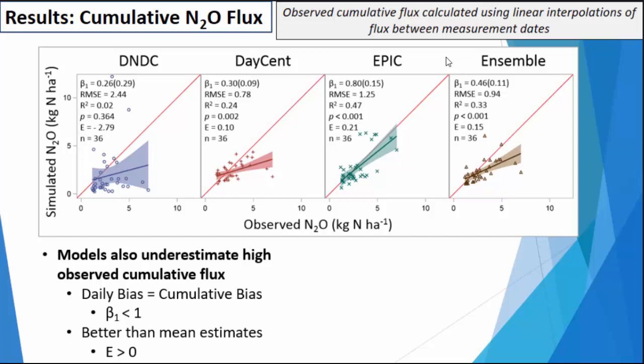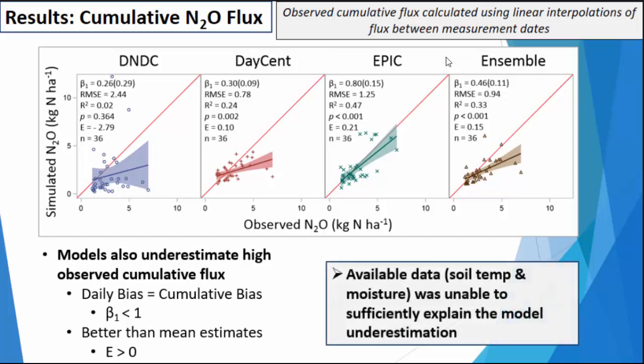Other than identifying this bias, we also want to try and explain it. One way is to look at other data collected at the same time as the N2O. We know that high soil temperature and soil moisture are associated with conditions for peak N2O flux, and they're typically collected alongside N2O measurements. However, we weren't able to use that data to sufficiently explain why the models were underestimating flux — they tended to underestimate N2O when they were underestimating soil moisture, but the relationship wasn't very significant. So at this level of analysis, we're left with only the conclusion that the models seem biased towards under-predictions and we're not really able to explain it thoroughly.